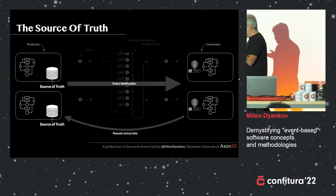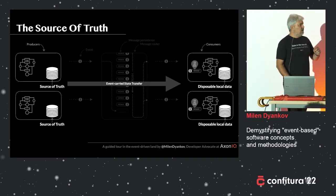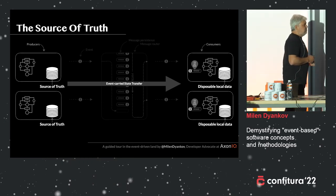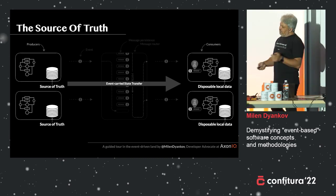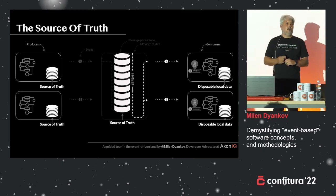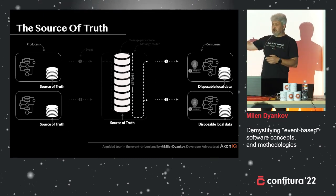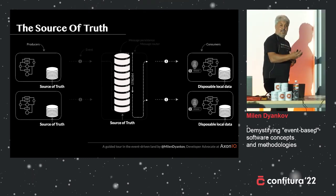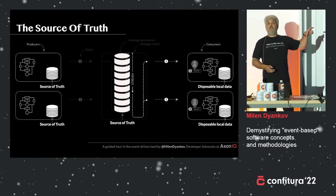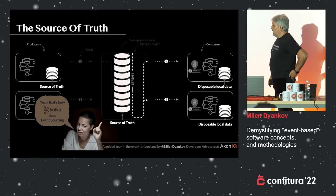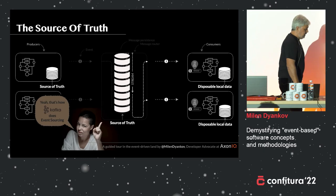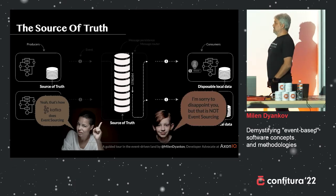For event carrier state transfer, event streaming changes quite a lot. The copy of data that consumers have is now nothing but a local cache — disposable data. You can delete it at any time, just throw it away and read the stream again. The stream now becomes your source of truth, because every single message that goes through the router is persisted there. Consumers can use local caches for performance optimization, but if in doubt, they always have the source of truth in the stream. A lot of people claim this is how Kafka does event sourcing — but I'm sorry to disappoint, that's not what event sourcing is. It's only part of the picture.